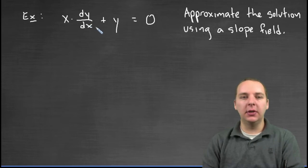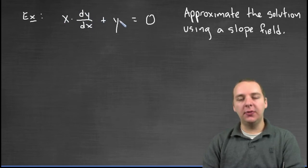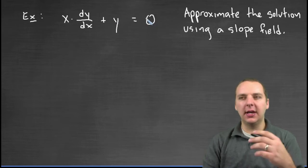A solution would be some mystery function, so that if you took its derivative and you multiplied that derivative times x, and you added that to the original function, you would get zero. Very difficult just to kind of dream up off the top of your head.